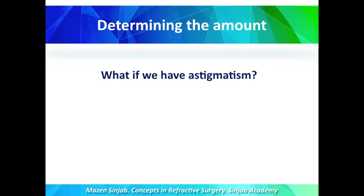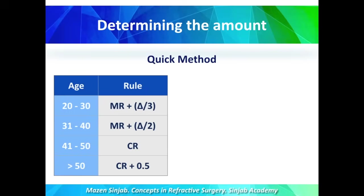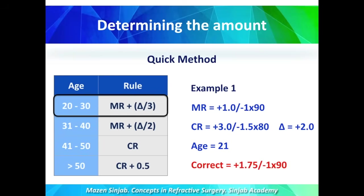But what if we have astigmatism? We follow the same rules but use the manifest astigmatism, not the cycloplegic astigmatism. Example number one: a patient has manifest refraction of plus 1 sphere, minus 1 at 90 (against-the-rule astigmatism), and cycloplegic refraction of plus 3 sphere, minus 1.5 at 80. Delta is plus 2 (the difference between manifest and cycloplegic spheres). The patient's age is 21, so we correct plus 1.75, minus 1 at 90 — using the manifest astigmatism in amount and axis.